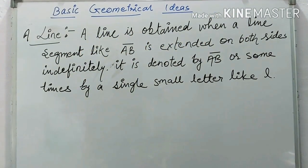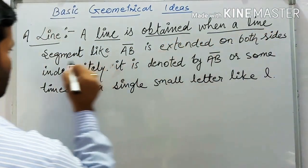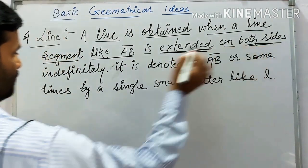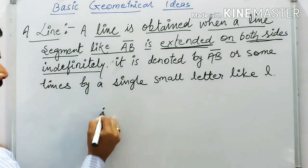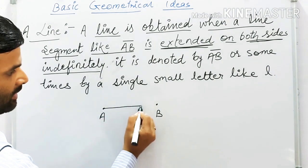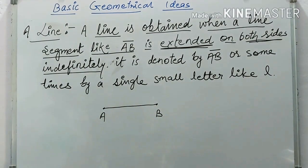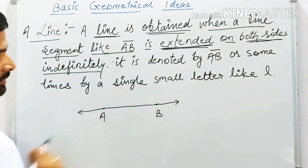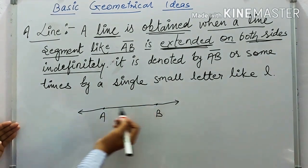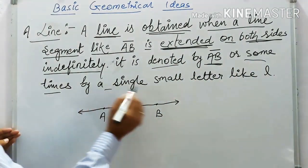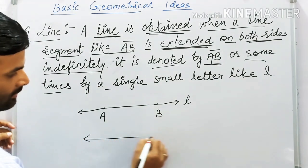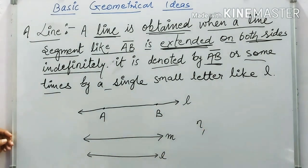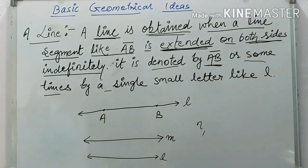The next topic is a line. A line is obtained when a line segment, like AB, is extended on both sides indefinitely. Suppose points A and B are joined — that is a line segment — but when extended both sides, it becomes a line. It is denoted as AB with arrows, or sometimes by a small letter like L, M, or N.